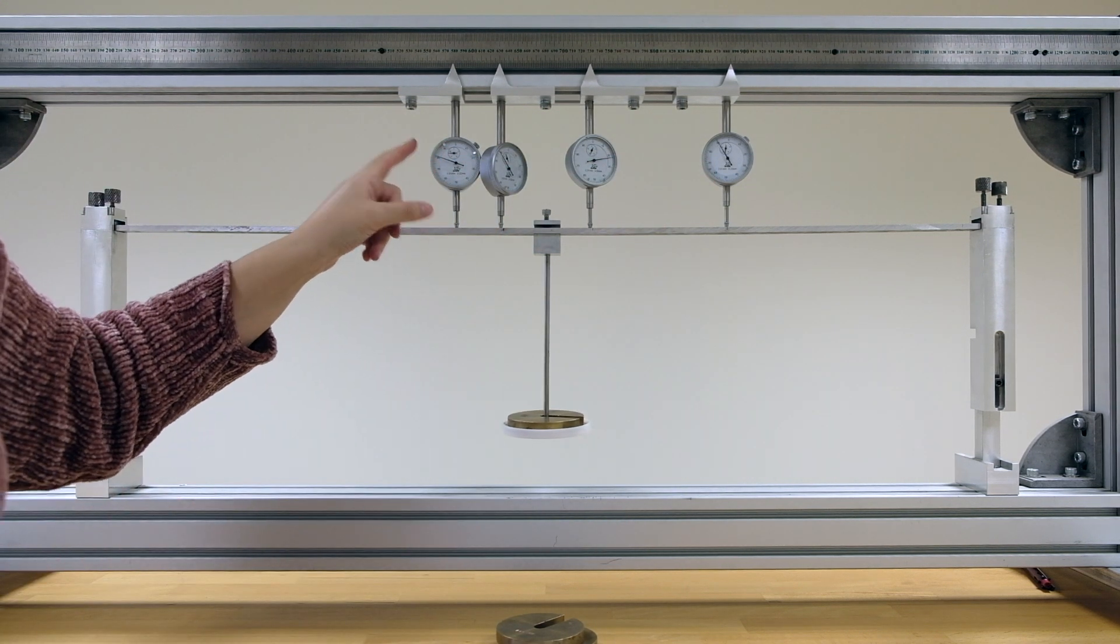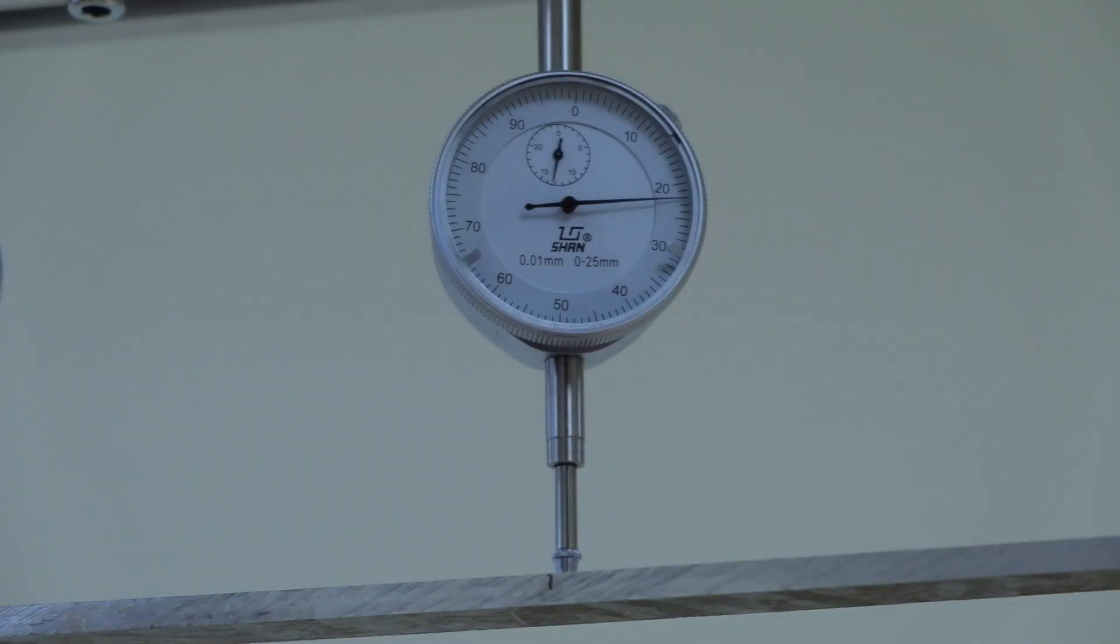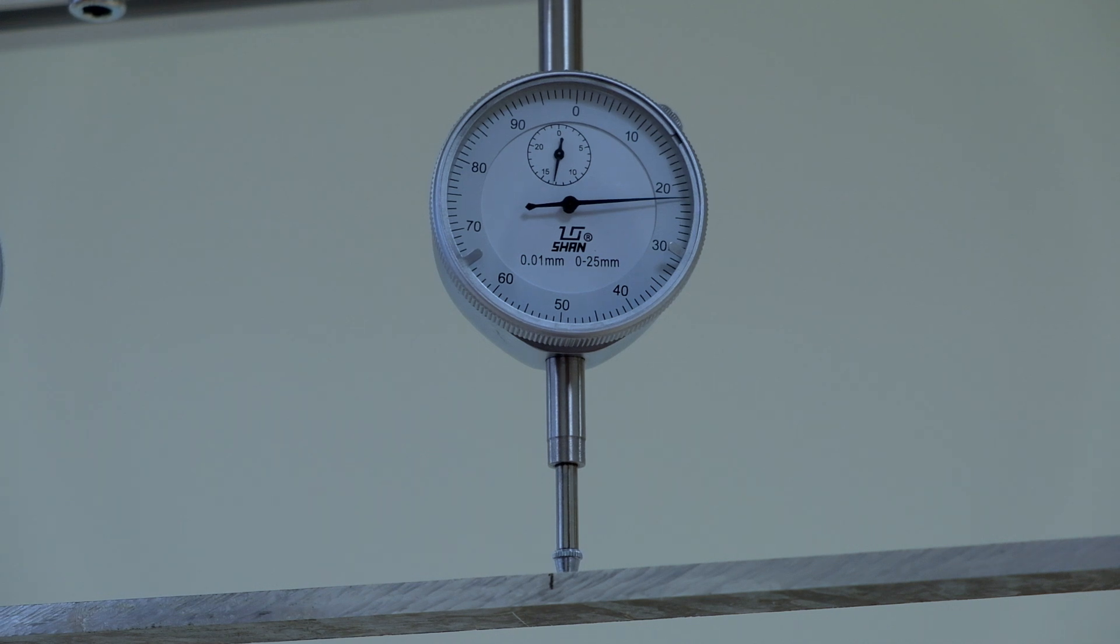Let's take a closer look at the dials and how you can get a reading from them. First of all, our dial has a range from 0 to 25 millimeters, and it has a resolution of 0.01 millimeters.